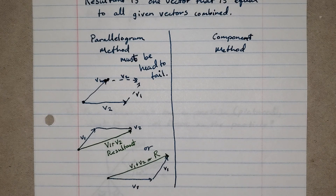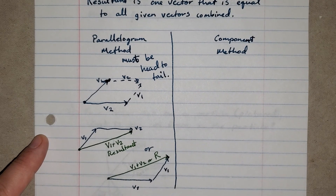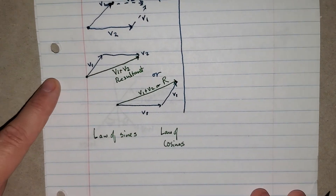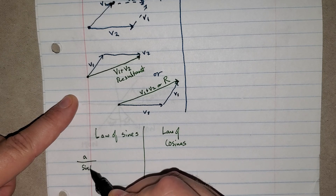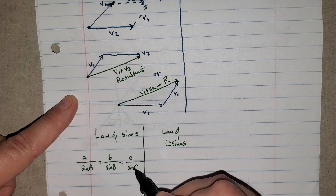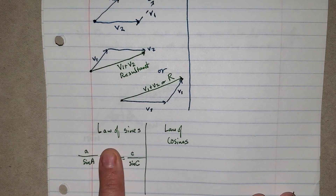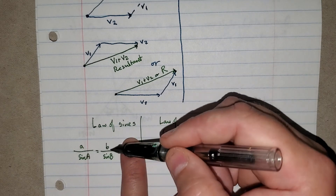Why is the parallelogram method handy? Well, in high school geometry and trigonometry, we talked a lot about triangles, and we have lots of formulas to find the sides of a triangle. The two we use for the parallelogram method are the law of sines and the law of cosines. The law of sines says: a over sine A equals b over sine B equals c over sine C. You take two parts of this equation and solve for the unknown.